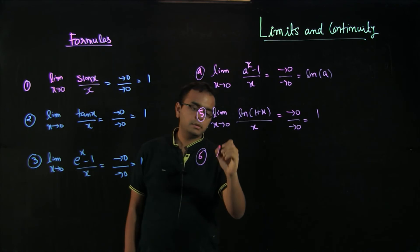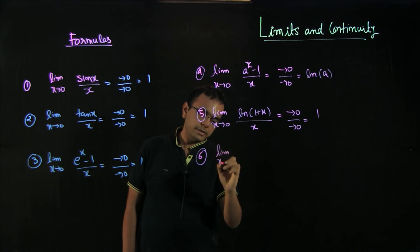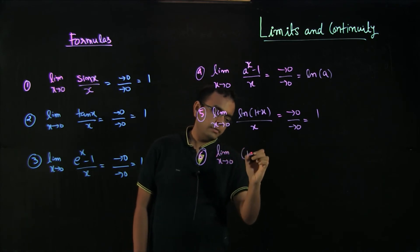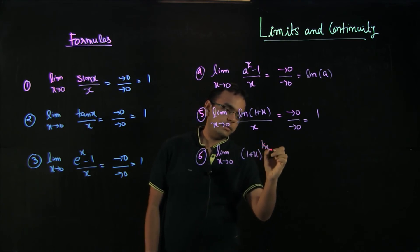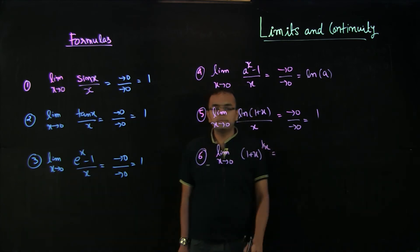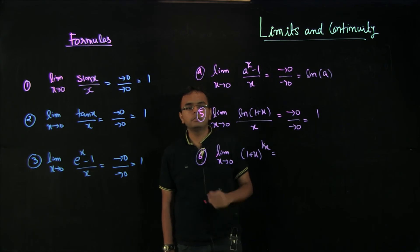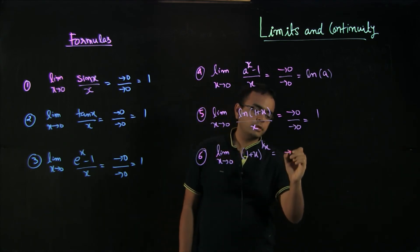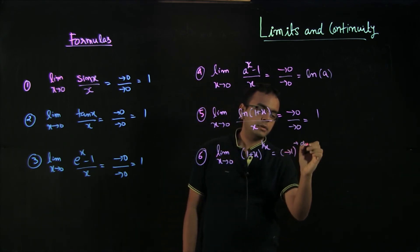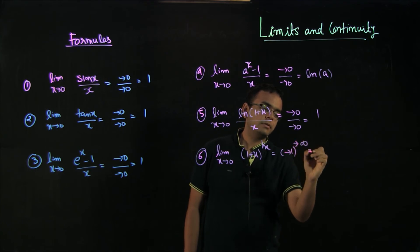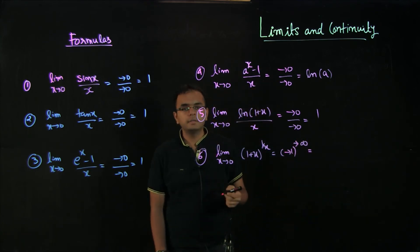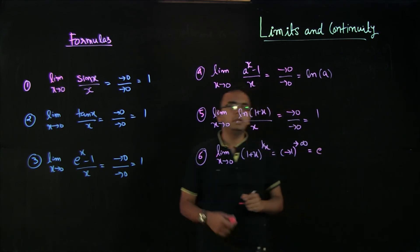Then limit x tends to 0 of 1 plus x raised to the power of 1 by x. If you put the value of x equals 0 in this case, this is approaching 1 to the power of infinity. This is also one of the indeterminate forms we have read, and the value of this is actually equal to e.